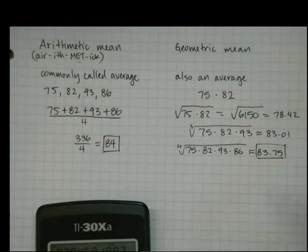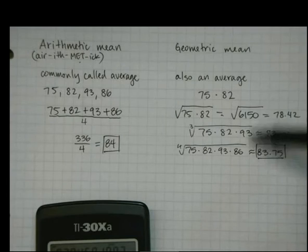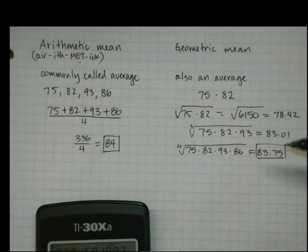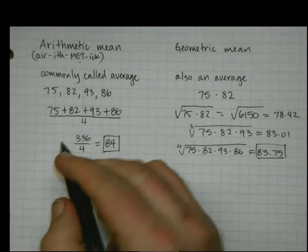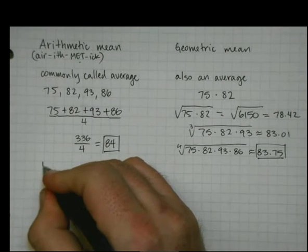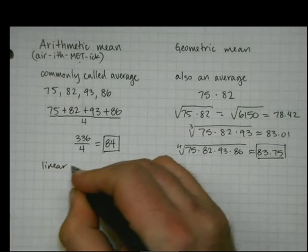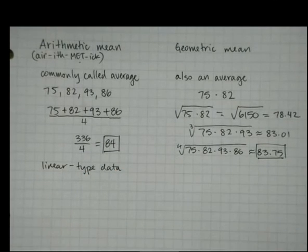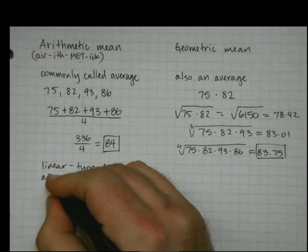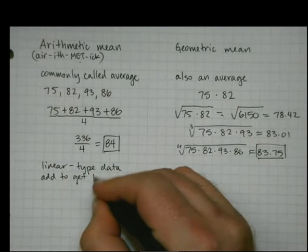Now you guys are saying to me, Mr. Pledger, why would I want to do all this work? Well, for this case, you generally wouldn't. So when would you do it? Well, I kind of said a little bit ago, arithmetic mean is used for linear type data. Meaning you add to get to the next one. Add to get to the next one.